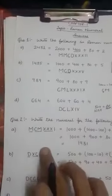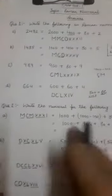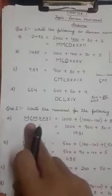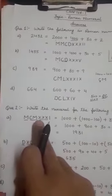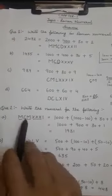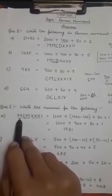Now question number 2. Write the numeral for the following. I have to write Hindu-Arabic numeral for these Roman symbols. MCMXXXI. Now again, I will write first the value for M.